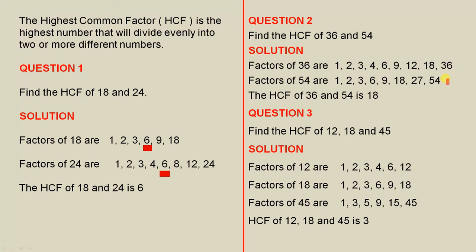The factors of 54 are these numbers here and there are 8 of them: 1, 2, 3, 4, 5, 6, 7, 8. Now what is the highest number that appears in both lists? 12? No, that doesn't appear there. 18? Yes, that appears there and there. 36? No, that does not appear. So 18 is the highest number that appears in both lists. The HCF of 36 and 54 is 18.